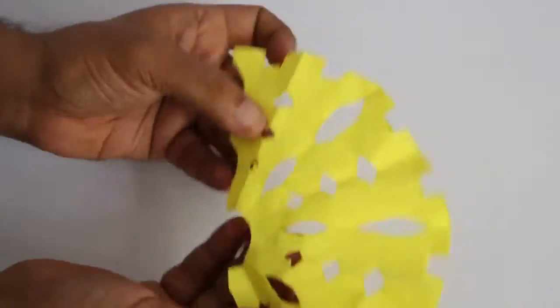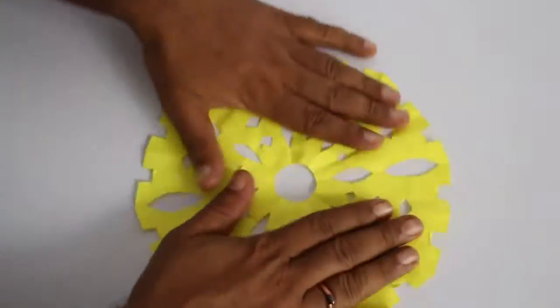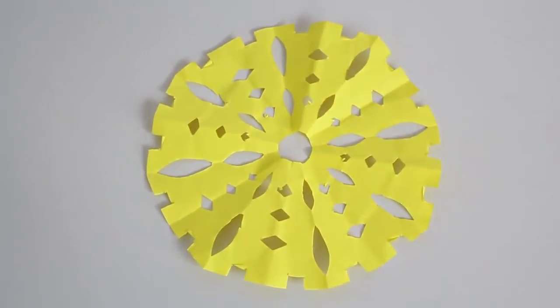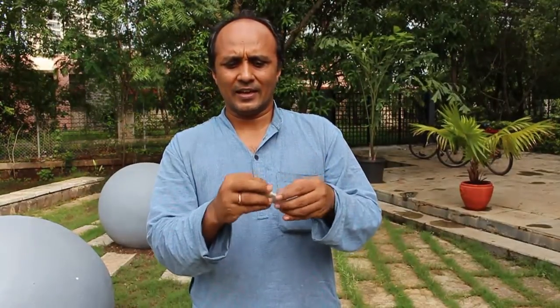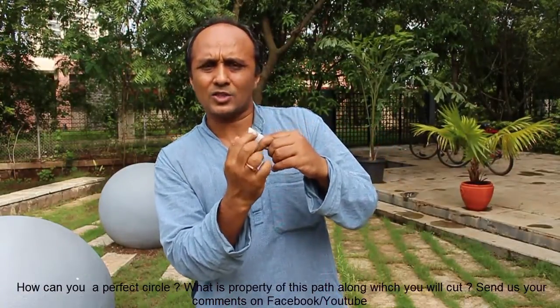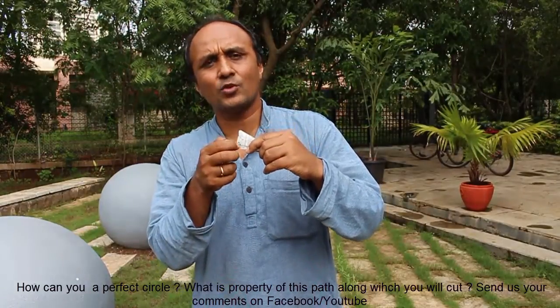Hope you enjoyed making the octahedron. Now it's time to think: we made this octahedron by four folds and cuts using a straight line. Can we cut along certain paths to get a perfect circle? What is the unique property of that path along which we should cut to make a perfect circle instead of an octahedron? Send us your answers. Thank you.